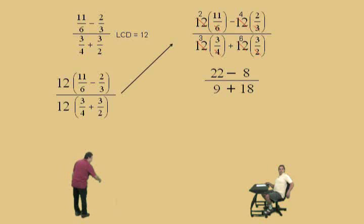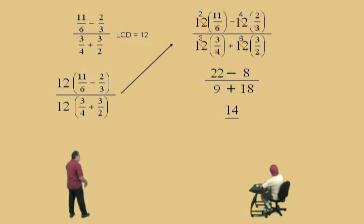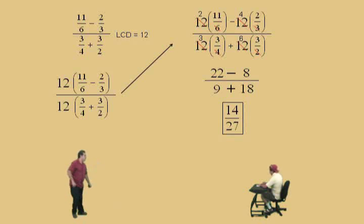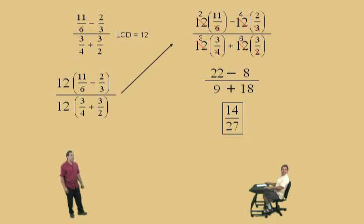Now what's 22 subtract 8, Charlie? Fourteen. And 9 plus 18? Twenty-seven. Very nice. Some kung fu right there. That was so much fun. Let's do another one.